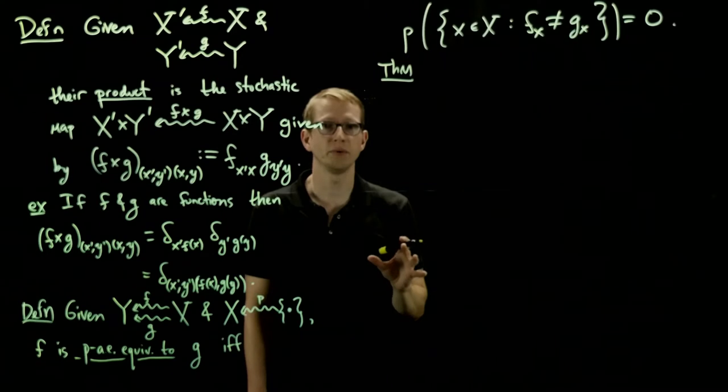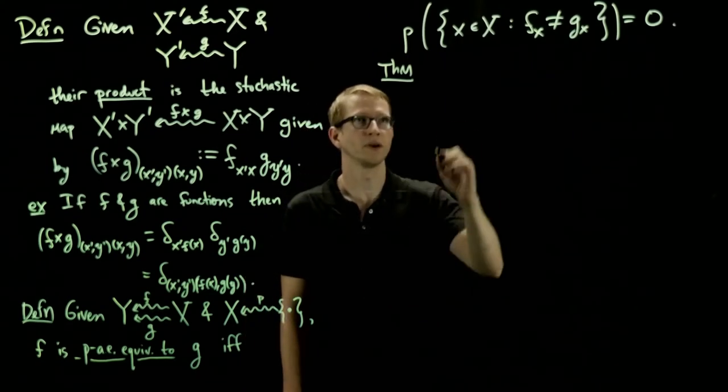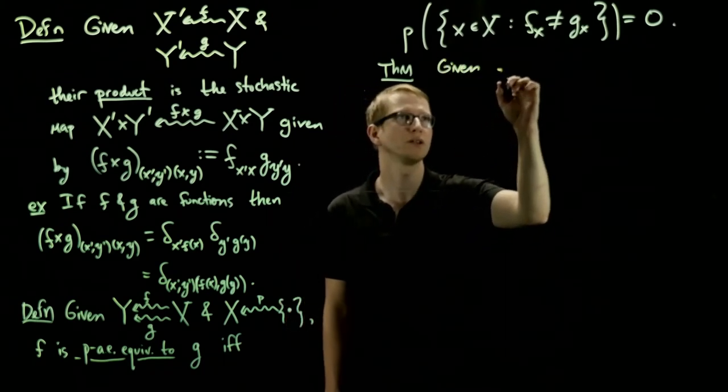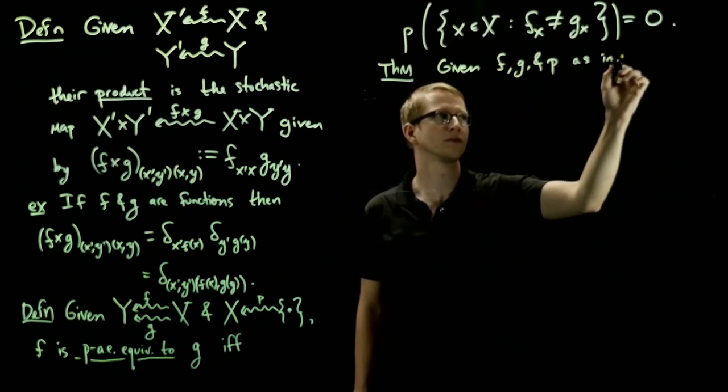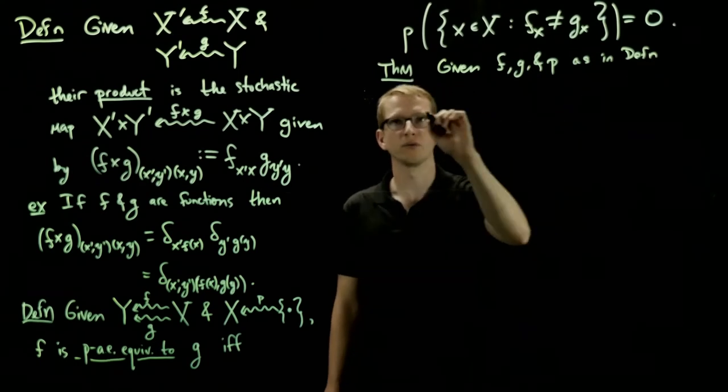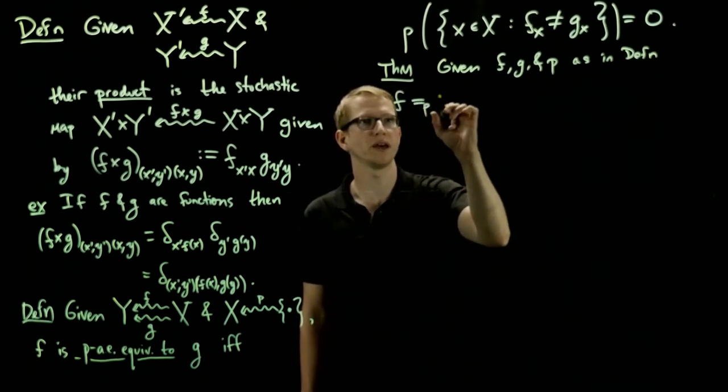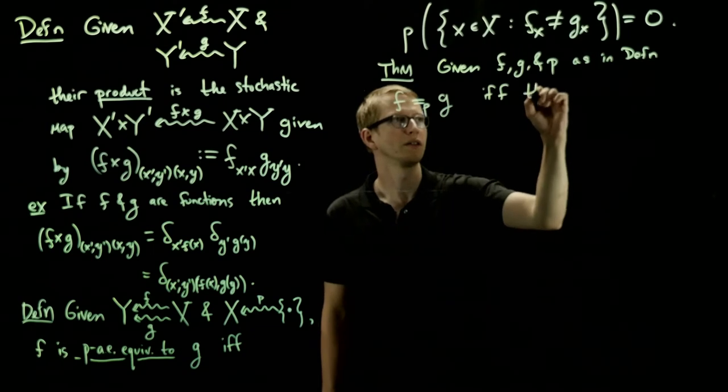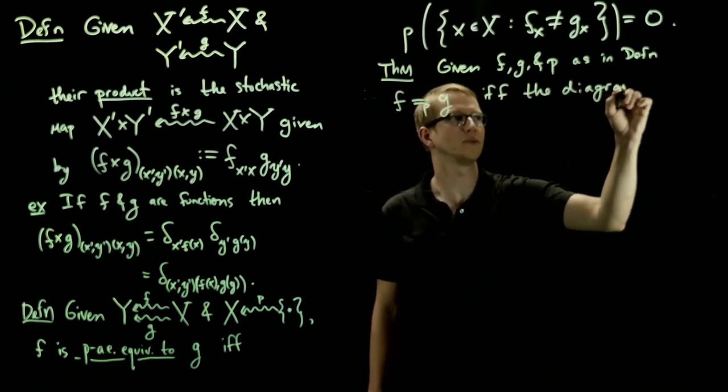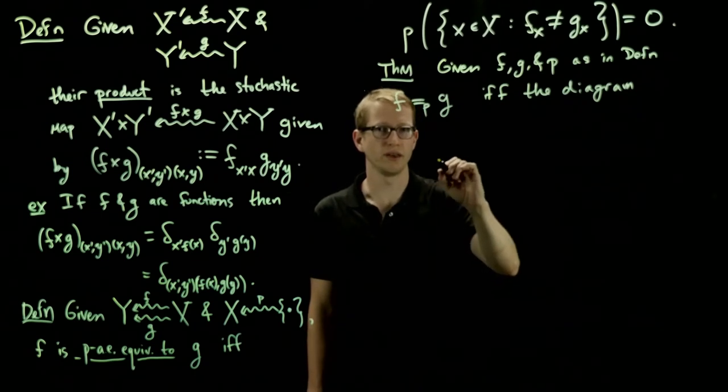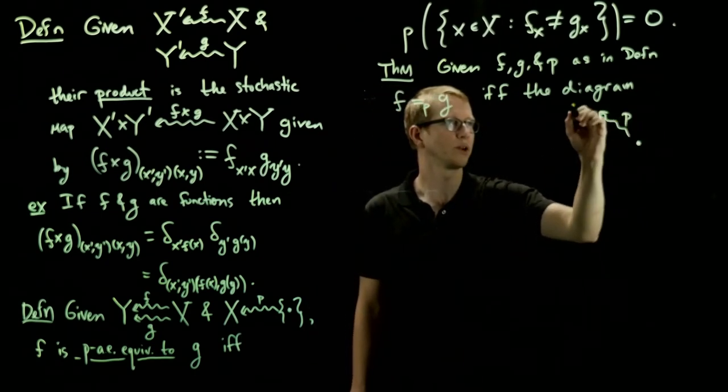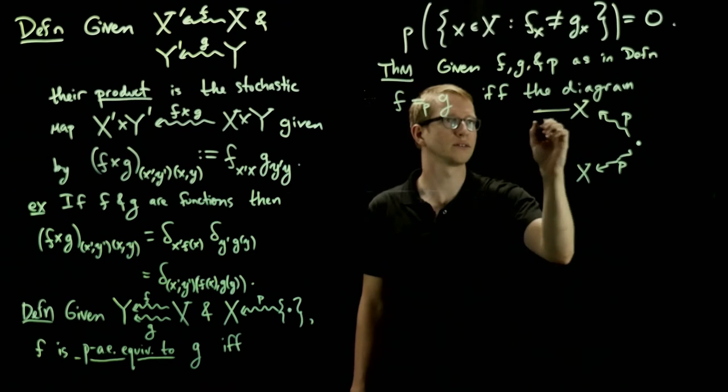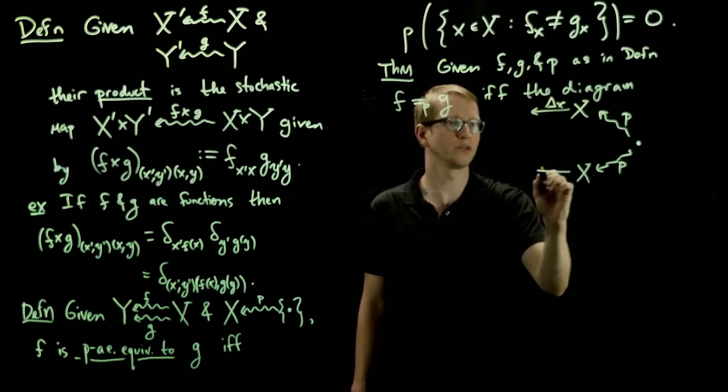There's another sort of diagrammatic way that you can encompass these definitions as well. So I'll write this as a theorem, but we'll use this idea later on. So it turns out that given f, g, and p as in this definition, f is almost everywhere equivalent to g. So this is the notation that we'll use. If and only if the diagram, now this is going to be a little bit of an interesting diagram. So we're going to produce our probability on x. We're going to duplicate x using the map that we introduced earlier.